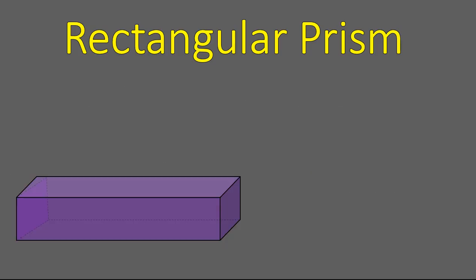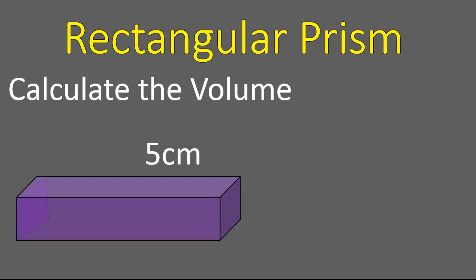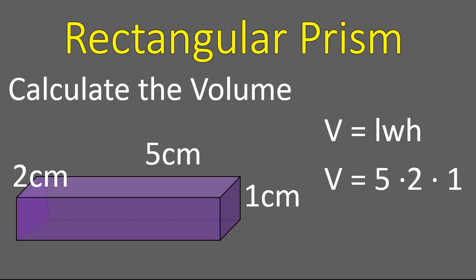So let's do one quick example of calculating the volume of this rectangular prism when you're given three measurements. This five centimeters is our length, two centimeters is our width, one centimeter is our height. So our volume is the length times the width times the height. And I would write that out as five times two times one and calculate that as being ten cubic centimeters.